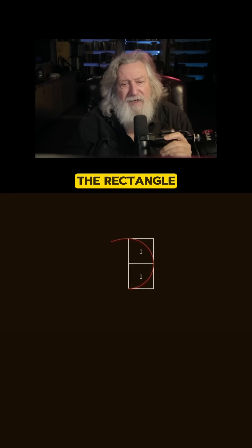Here we have what's called the golden rectangle, or sometimes the rectangle of the whirling squares.